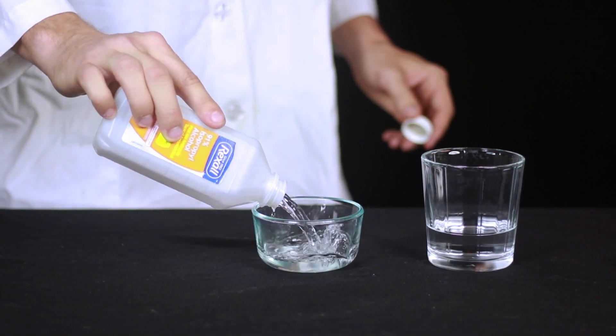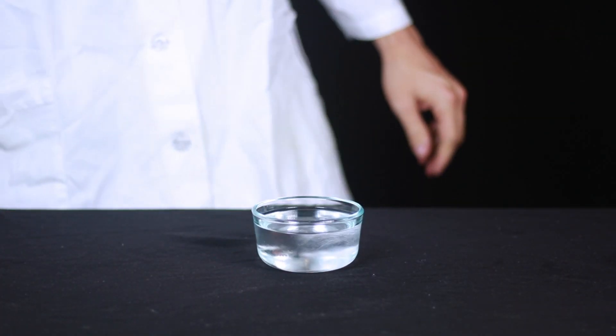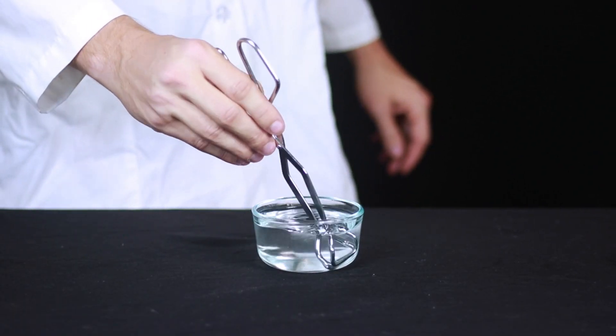To begin with, pour equal parts 91% isopropyl alcohol and water in a heat resistant container. Make sure to stir the solution so that both liquids are mixed together well.